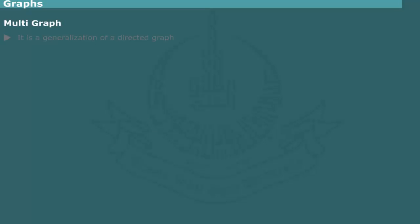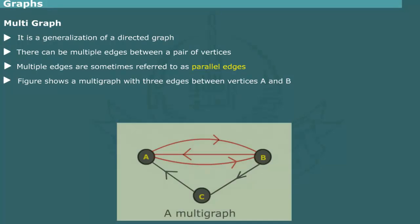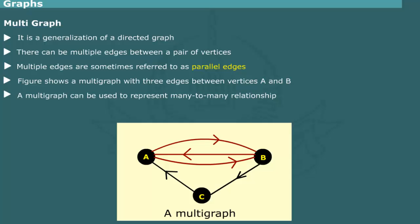Multigraph: A multigraph is a generalization of a directed graph. In the structure, there can be multiple edges between a pair of vertices. Such edges are termed as parallel edges. Figure shows a multigraph. Observe that there are three edges between vertices a and b: there are two parallel edges from a to b and one edge from b to a. A multigraph is used to represent a many-to-many relationship among graph elements.